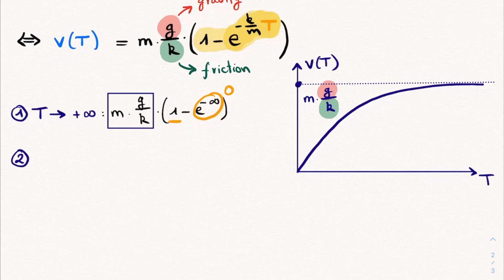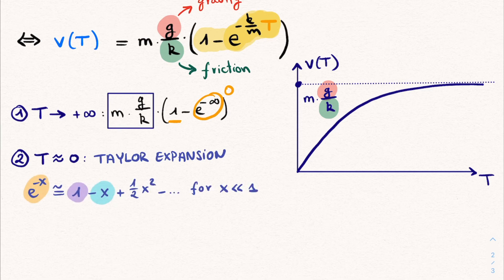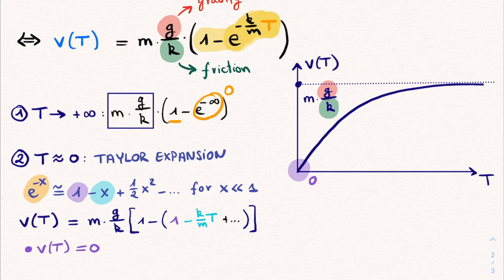The second limiting case is to look at times that are very small, just after the object starts falling. And this is a perfect example of Taylor expansion. Let's remind ourselves that e to the power of minus x can be Taylor expanded as 1 minus x plus 1 over 2 x squared and so on, for x being very small. And in this case this minus x is equal to minus k over m times t. So if we replace this e power with the Taylor expansion in our velocity function, we get the following. At this point this function can be looked at term by term. First if we look at the zeroth order expansion term, we simply get 1. So inside of our brackets we get 1 minus 1, which is 0. So our velocity for a very small time is equal to 0, and this makes sense. This is only at the very start, where our initial velocity is indeed 0.